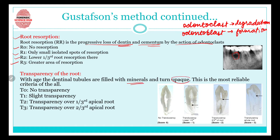The sixth and last criterion is transparency of the root. With age, the dental tubules are filled with minerals and start to turn opaque, causing the root to become slightly transparent. This is the most reliable of all six criteria. T0 means no transparency. T1 means slight transparency. T2 means transparency over one-third of the apical root. T3 means transparency over two-thirds of the apical root, which can include transparency in the whole root.